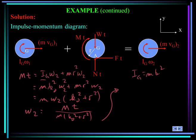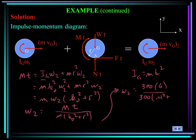Plugging in the numbers: omega_2 = (300 N·m × 6 s) / (300 kg × (0.4^2 + 0.6^2)) = 11.5 radians per second.